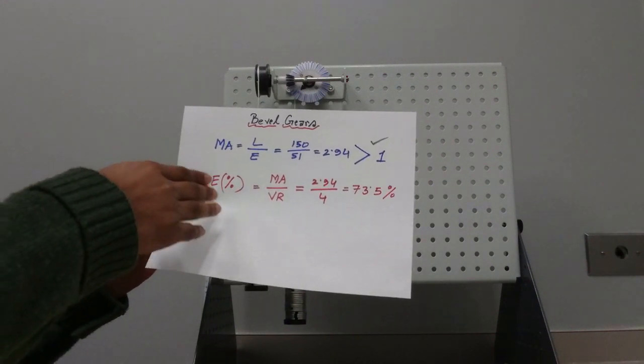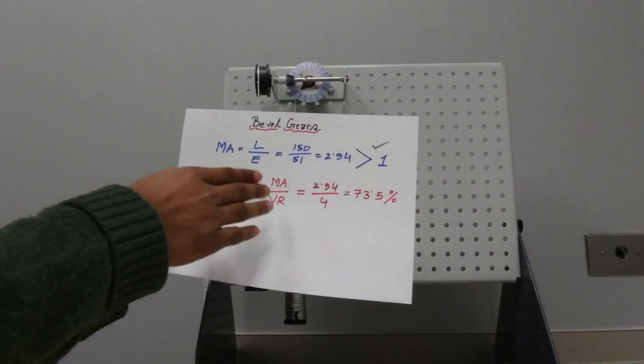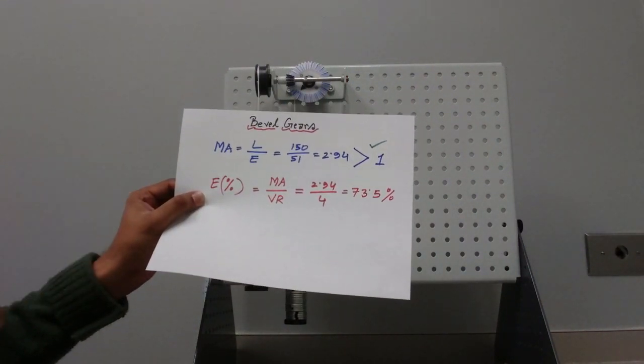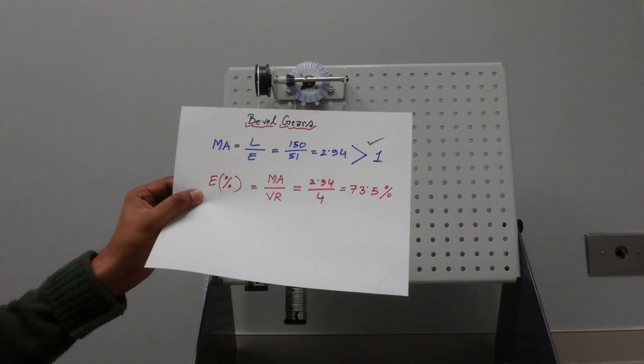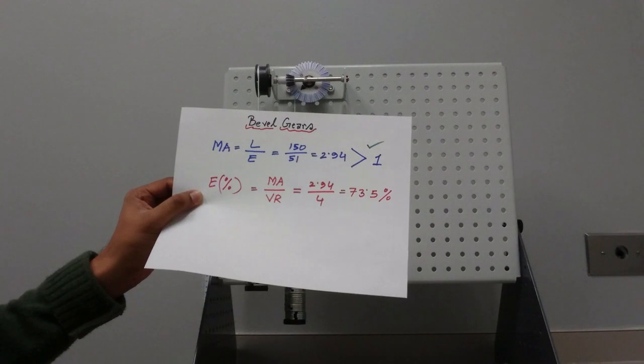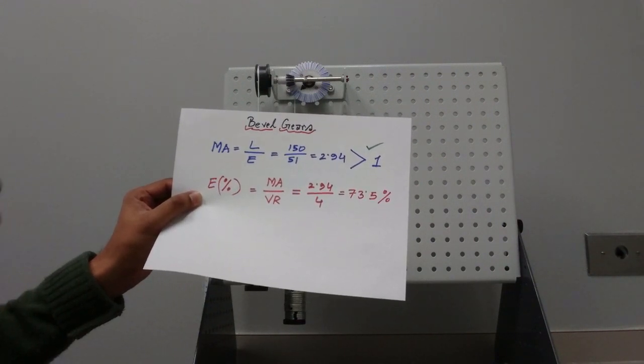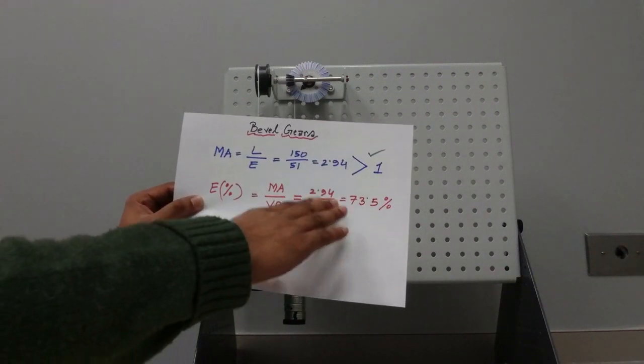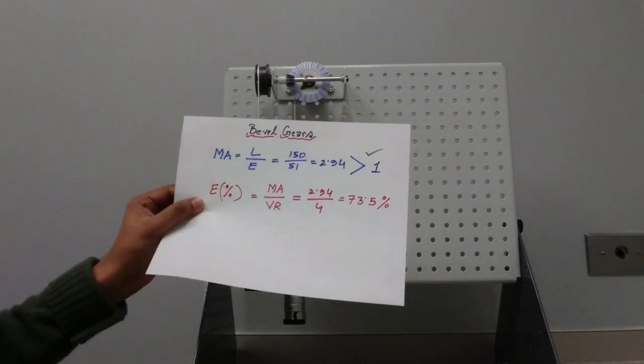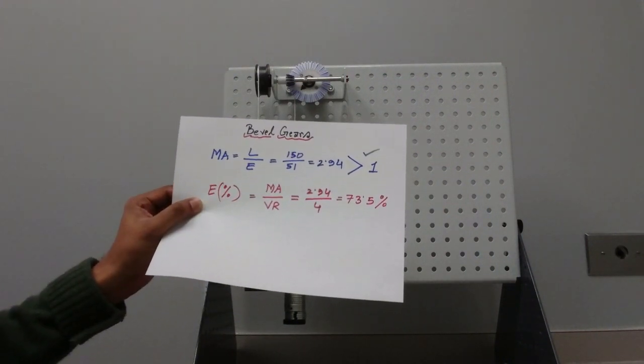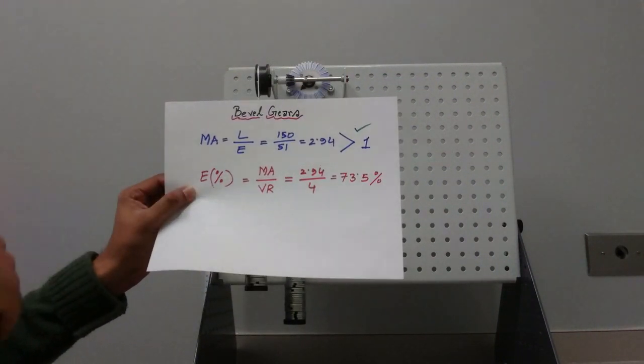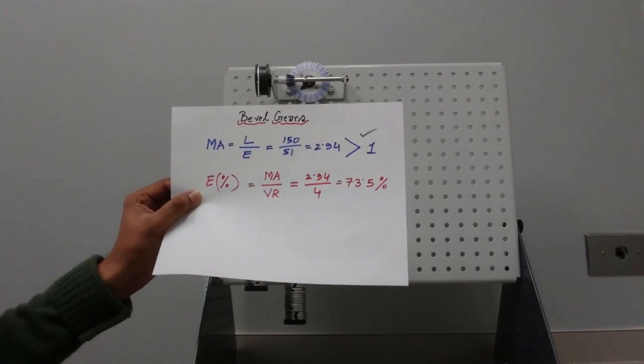We saw in our setup we have a velocity ratio of 4, meaning it takes four turns of the driver to have one turn of the follower. So if we divide it by that, we found the efficiency of 73.5 percent. Now we're going to follow the same procedure for all our data points and we'll see how it looks like.